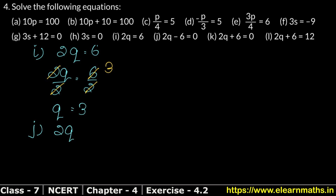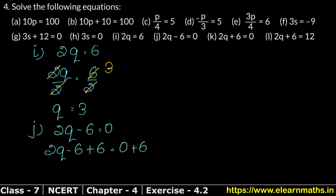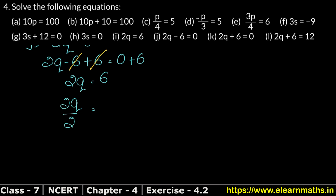Part J is: 2q minus 6 equals 0. First we solve for the constant. Since minus 6 is there, we add 6 to both sides. So 2q minus 6 plus 6 equals 0 plus 6. The minus 6 and plus 6 cancel, leaving 2q equals 6. We then divide both sides by 2. The 2s cancel, and 2 times 3 is 6, so q equals 3 is the answer.